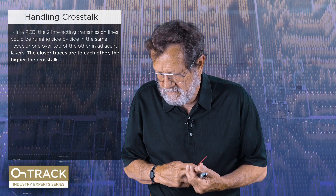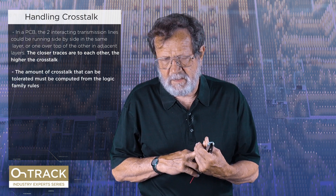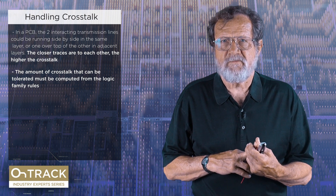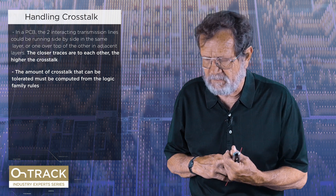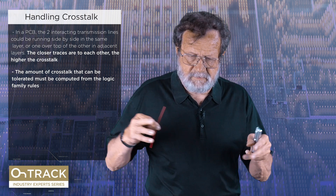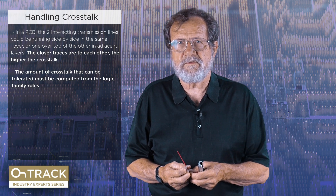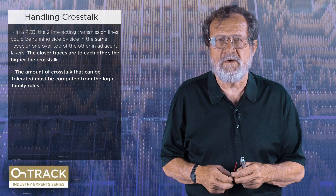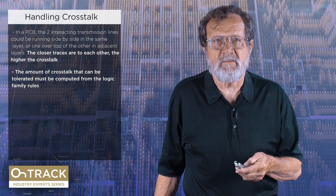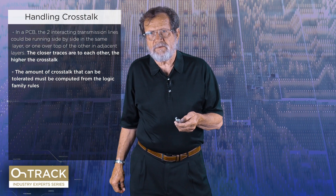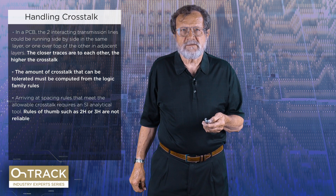Here's the hard part: how much crosstalk is okay? How much can you tolerate? This is an SI analytical problem. We need to know what the logic family can tolerate, and then we need to use an SI tool like a 2D field solver — propose a particular geometry and calculate what crosstalk will result from that choice. Almost always it will turn out that what you thought was okay won't work. We'll iterate on that until we come up with a geometry that satisfies the logic family. 2D and 3D field solvers will do this, and there are quite a few tools on the market.